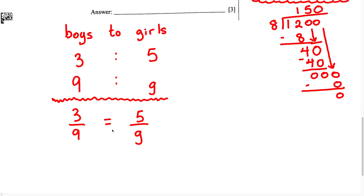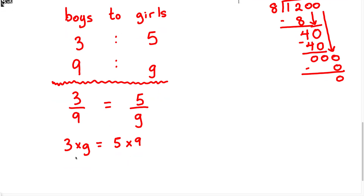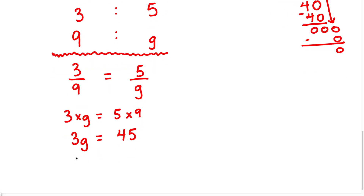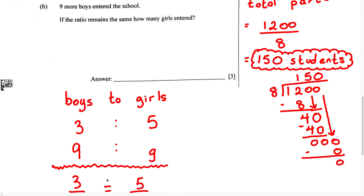Now we're going to cross multiply and find G. When we cross multiply, 3 is going to be multiplied by G, equals 5 multiplied by 9. Three times G gives us 3G, equals five times nine which gives us 45. Now we're going to have to get G by itself, so all we're going to do is divide both sides by 3. The 3s cancel, and when we divide 45 by 3, G is going to give us 15. We know G represents girls. Therefore, the total number of girls that entered the school when nine more boys entered is going to be 15.